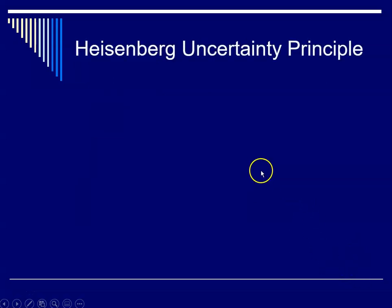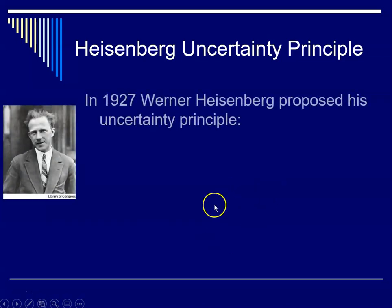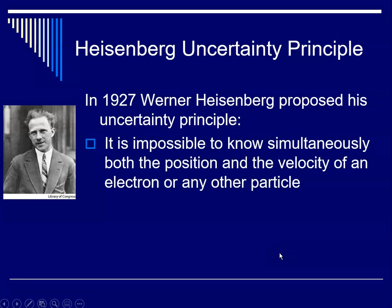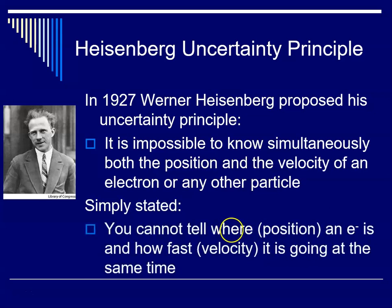So now we have to talk about some more guys. Heisenberg's uncertainty principle was proposed by Werner Heisenberg in 1927. It states it is impossible to know simultaneously both the position and velocity of an electron or any other small particle. Simply stated, you cannot tell the exact position of an electron and how fast it's moving at the same time.